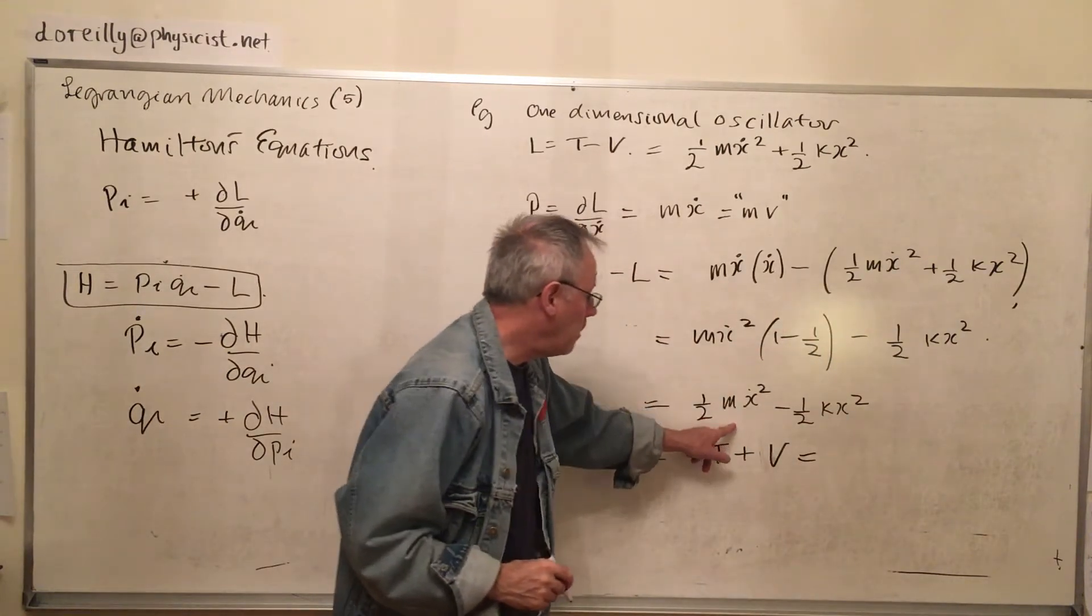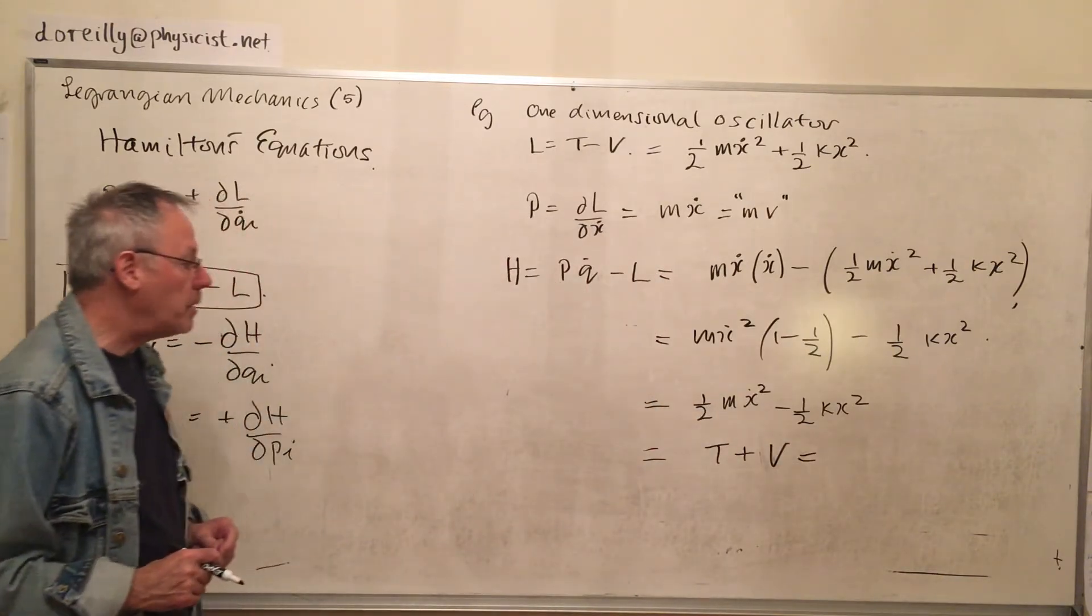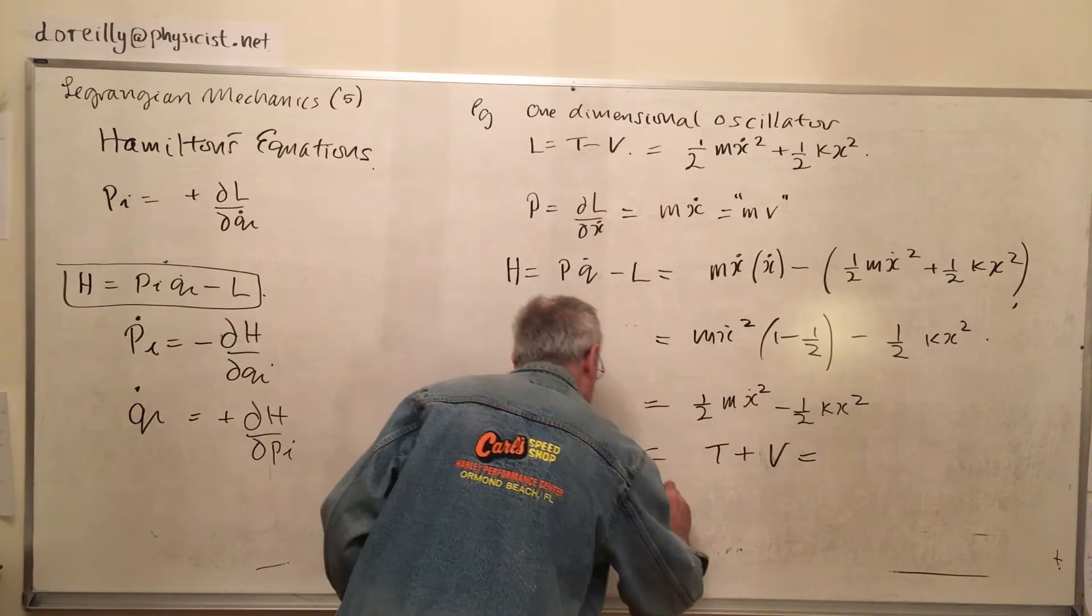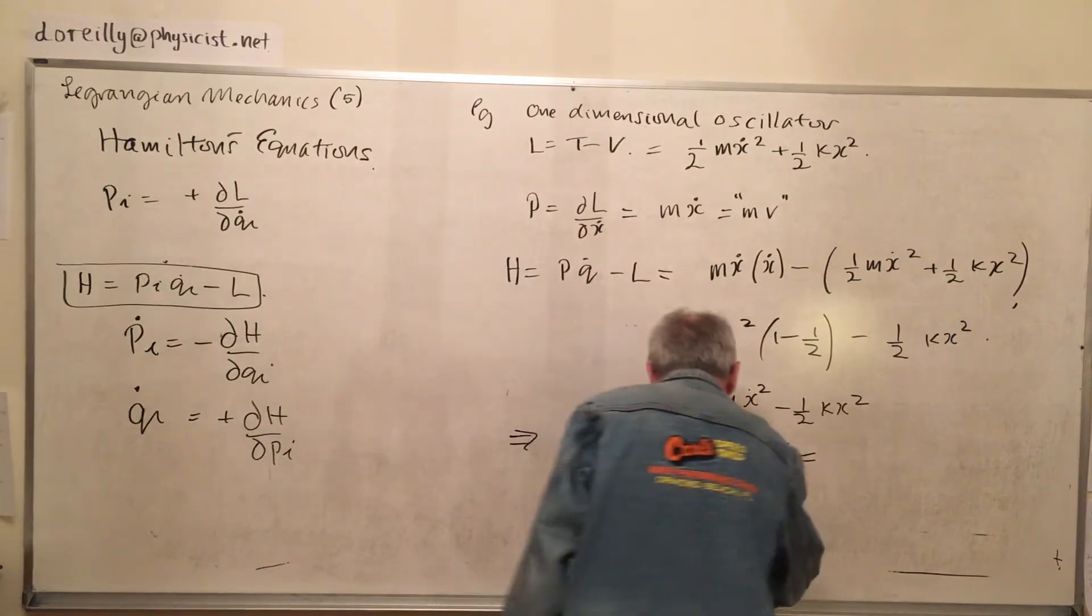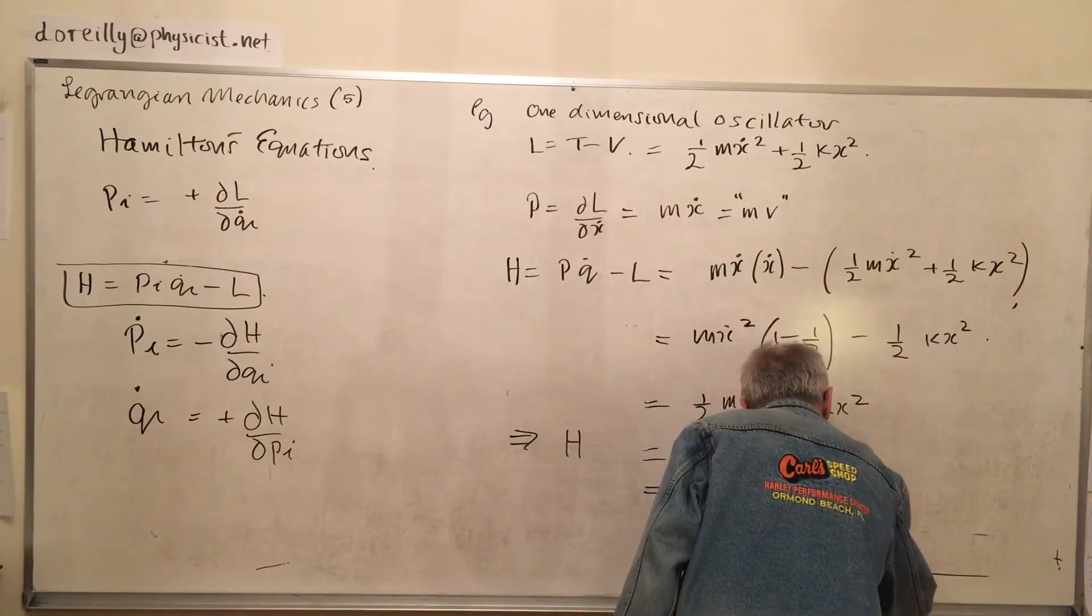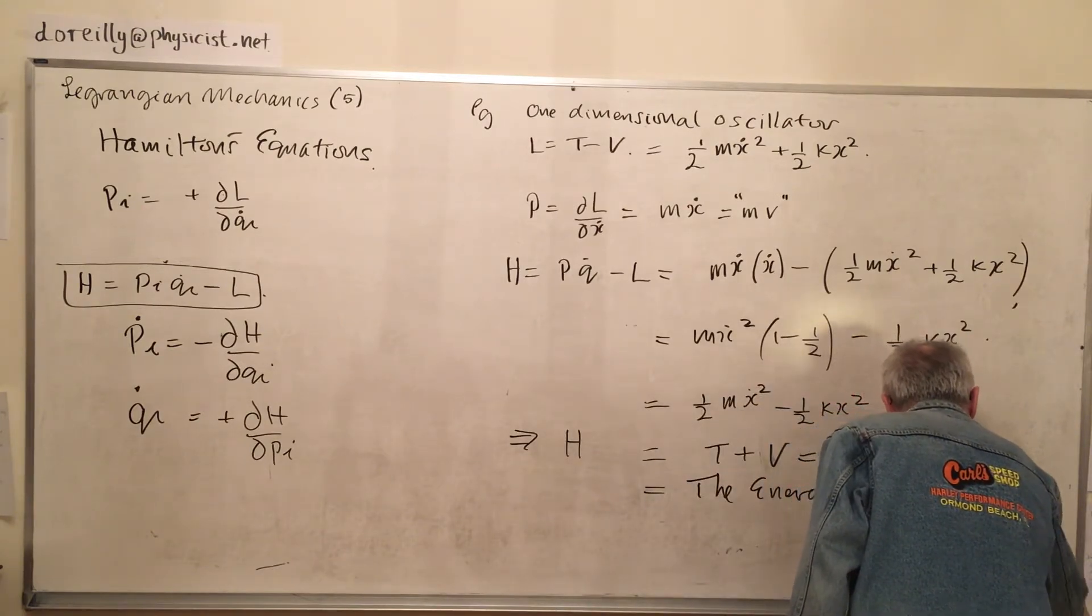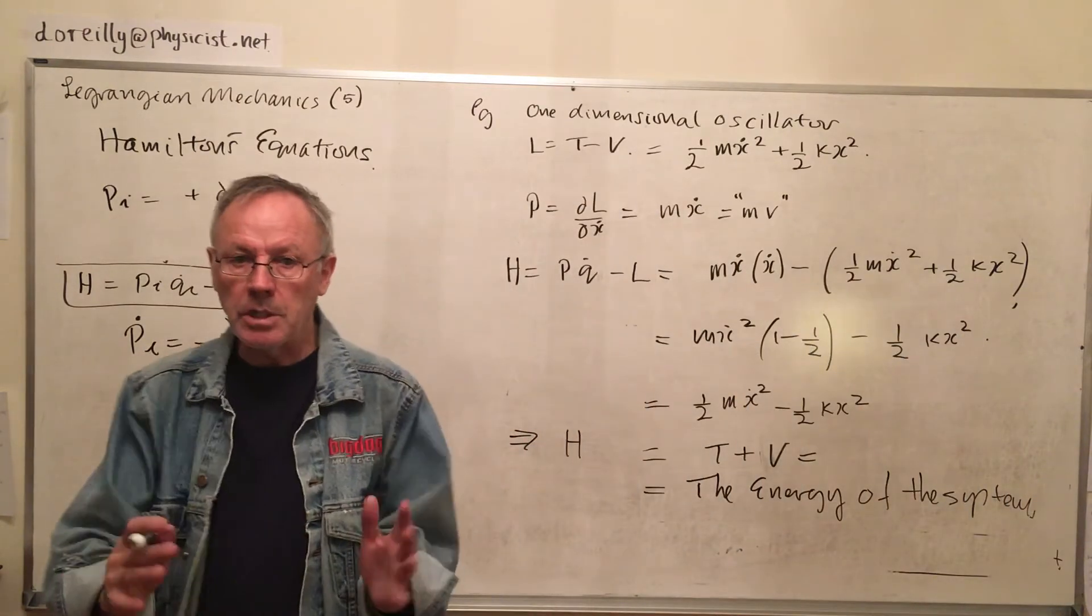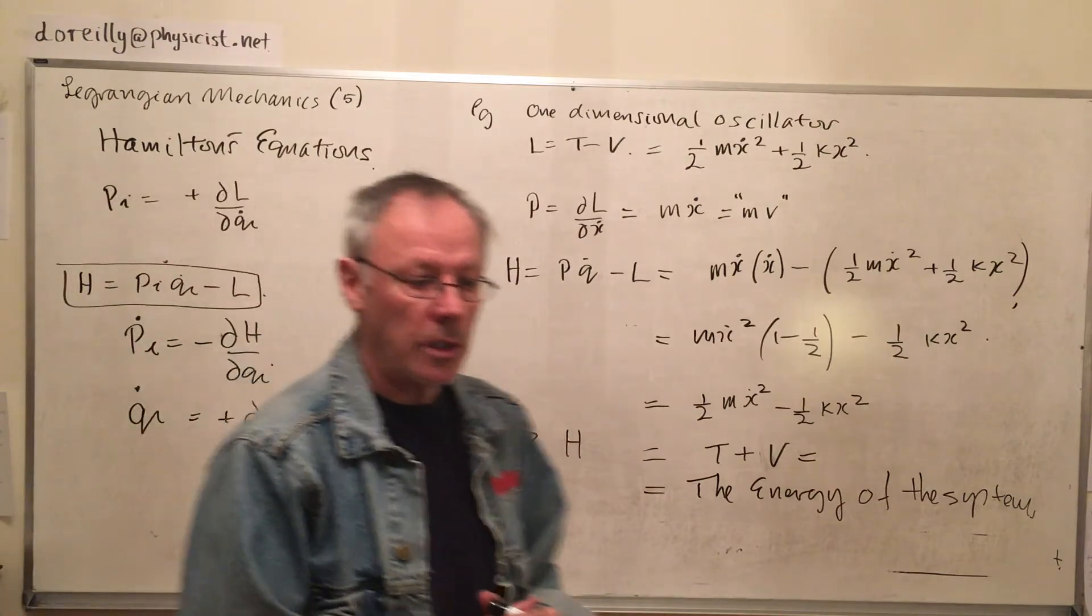Now, minus the Lagrangian is going to be negative this one. So we have m x dot squared into 1 minus 1 half. Factor of minus 1 half here. So we get kinetic plus potential energy. So this gives us an insight as to what the Hamiltonian actually is. h is t plus v. And we know that to be the energy. So the energy operator is the Hamiltonian. And that's why it crops up in quantum mechanics, this Hamiltonian, in a very useful way.